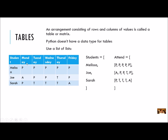I've taken the information and broken it down: I have one list for the students because that is different data, and then another list of lists for the attendance — all the attendance for Melissa, for Jo, and for Sarah. The first element is a list, the second element is a list, and the third element is a list. Index zero is Monday, the next is Tuesday, Wednesday, Thursday, and Friday. So it's all organized.